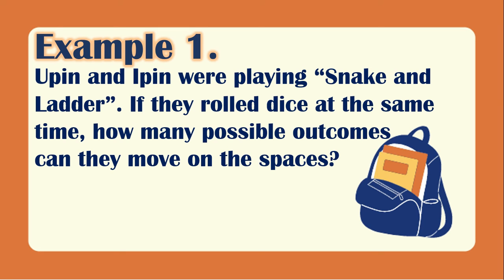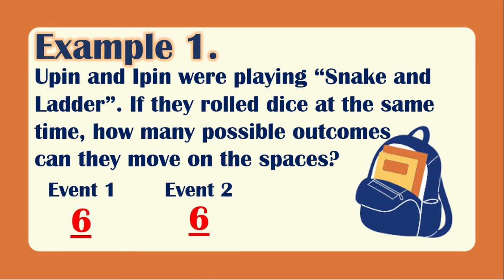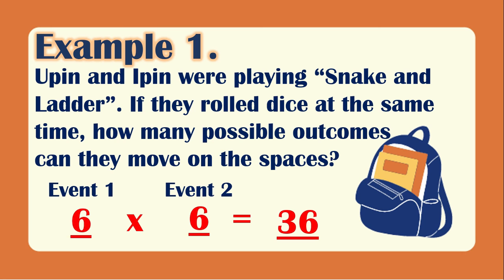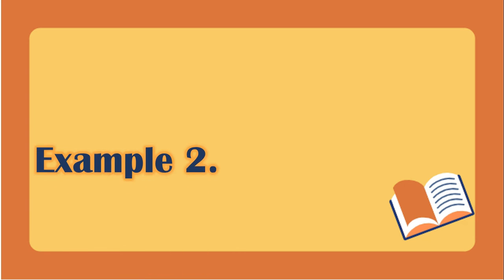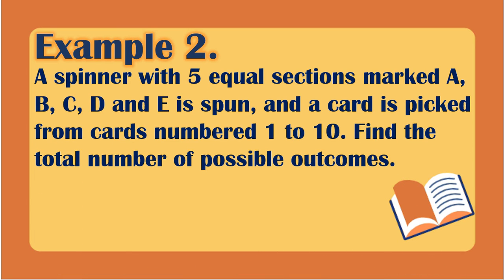Example number one: Upin and Epin are playing snake and ladder. If they roll two dice at the same time, how many possible outcomes are there? For event one — the first die — we have six possible outcomes. For event two — the second die — we also have six possible outcomes. Multiplying them, the total is 36 possible outcomes.